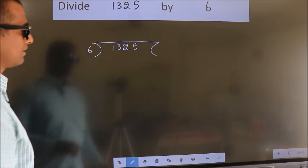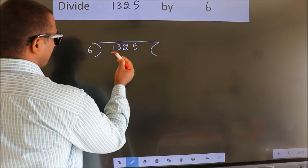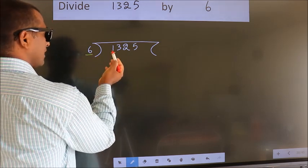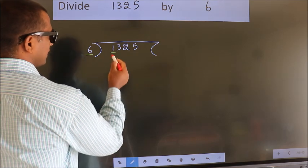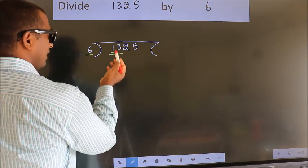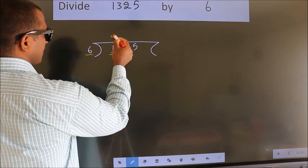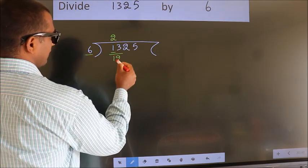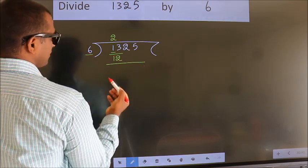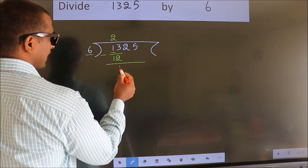Here we have 1. Here 6. 1 smaller than 6. So we should take 2 numbers. 13. A number close to 13 in 6 table is 6 times 2 is 12. Now we should subtract. We get 1.